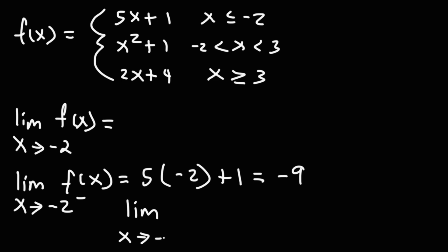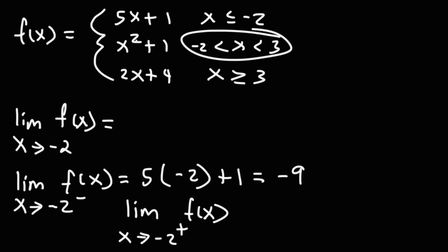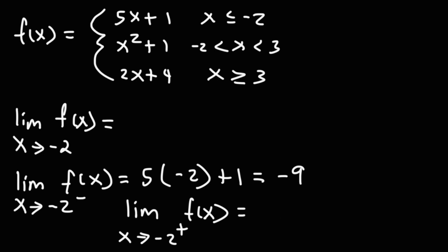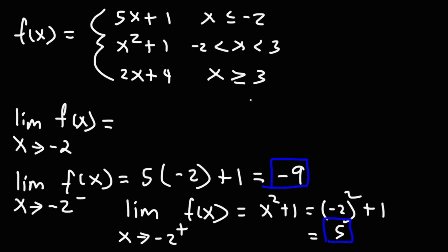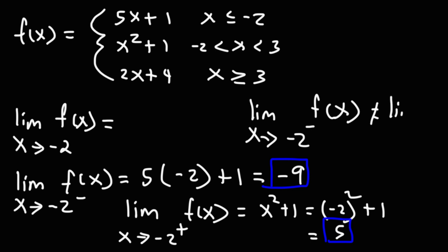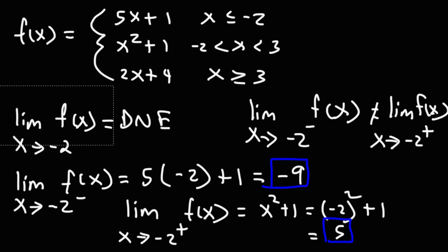Now let's evaluate the right side — the limit as x approaches negative 2 from the right. Approaching negative 2 from the right, we pick values greater than negative 2, so we're between negative 2 and 3, and we use x squared plus 1. Replacing x with negative 2: negative 2 squared is positive 4, plus 1 is 5. These two are not the same, so the limit as x approaches negative 2 from the left does not equal the limit from the right. Therefore the limit as x approaches negative 2 does not exist, because the left-sided and right-sided limits don't match.